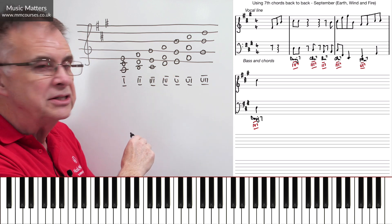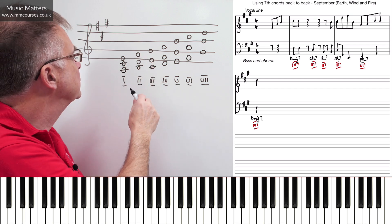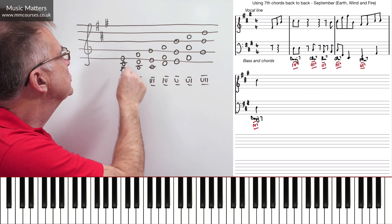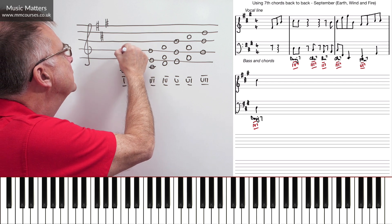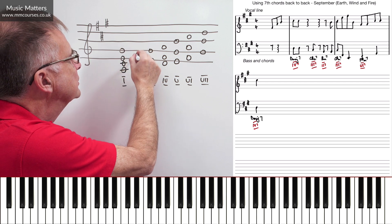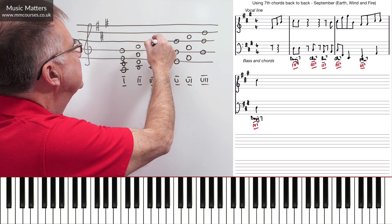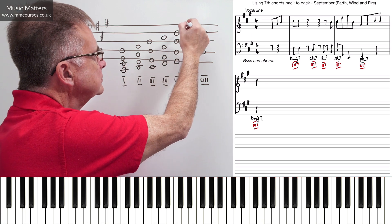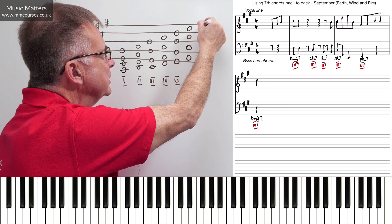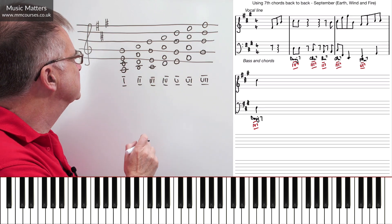Now to turn these into sevenths, all we've got to do is add a seventh on top of the chord. A seventh above each root note. So we've got a root, a third, a fifth, so that's the seventh. A root, a third, a fifth, that's the seventh. A root, a third, a fifth, and that's the seventh. And so we go on. So you get the idea of this. I'm sure this is quite familiar to many people, but I just wanted to make sure everybody's on board with what we mean by seventh chords.